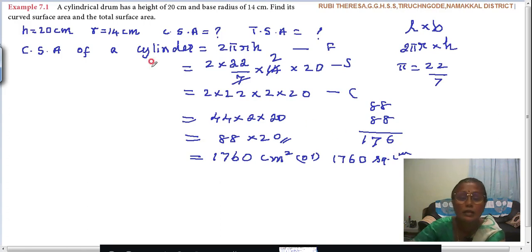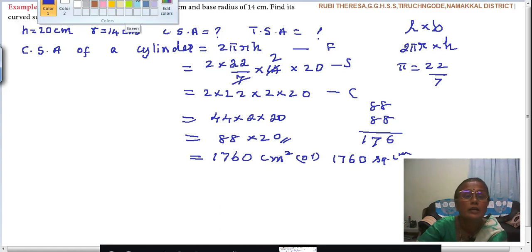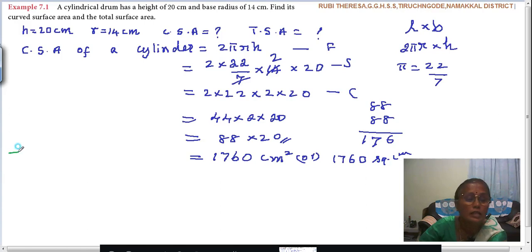Centimeter. Either you can write centimeter square or you can write square centimeter. Do you follow? Next one is TSA of a cylinder. I told you in one color only you must write. For explanation purposes, I am using colors.